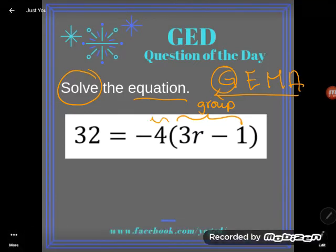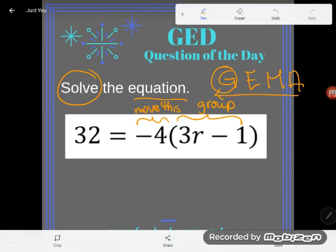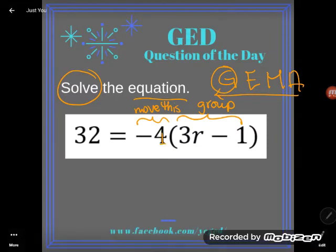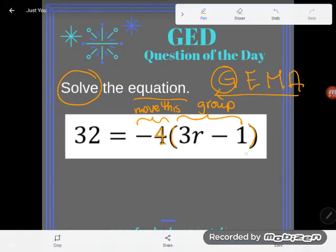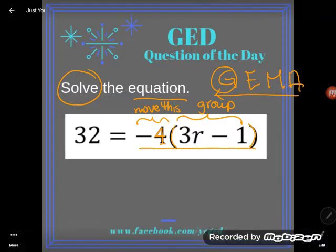And I'll take away this negative 4 first. Now, a lot of students want to move this by adding 4. You'd be so wrong. Careful. Do you see how this negative 4 is all shoved up against this grouping? That is a multiplier. I'm going to remove it by dividing.